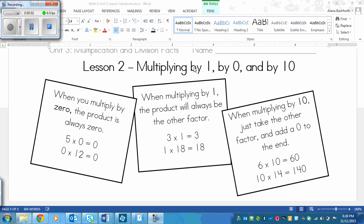This is a lesson for multiplying by 1, by 0, and by 10. Now, these are probably the three easiest numbers to multiply with, and so let's look at the rules for these ones.